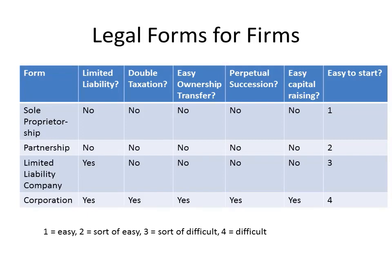Now we'll talk about the different legal forms a business can take. First, the sole proprietorship — which is what Mark had. Sole proprietorships do not have limited liability, so you can easily find yourself in Mark's situation. There is no double taxation — income distributed to the owner is treated purely as personal income, just like a paycheck. However, it is not easy to transfer ownership. Mark would have to find someone interested in mowing lawns in Hattiesburg, Mississippi, who was not already in that business and had the money to buy it. It's often difficult for sole proprietors to even know what their business is worth.